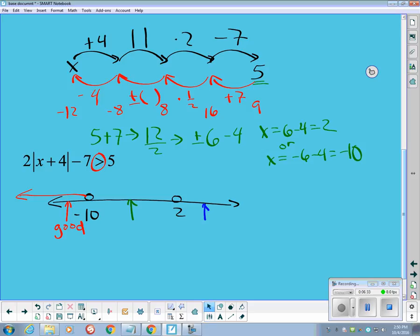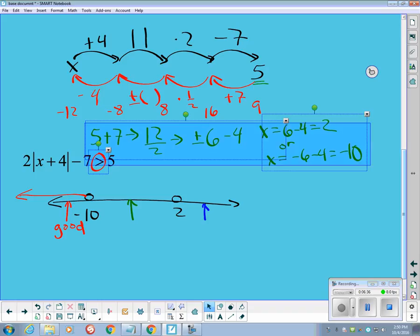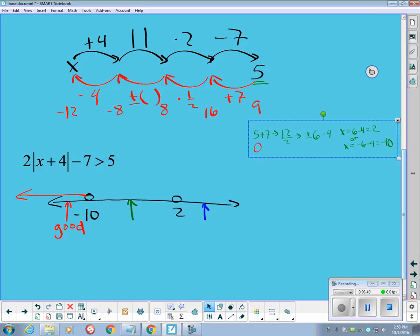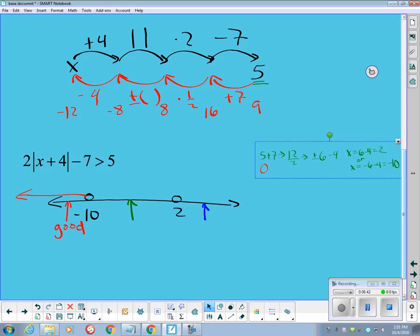I'm going to go ahead and test the green point as well. Let me get some of this out of my way here a little bit. So when I test my green point, if 0 is in between there, so 0 is a good place to choose. 0 plus 4 is 4.